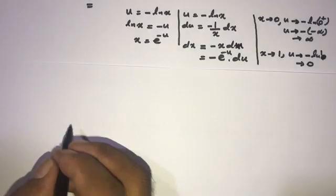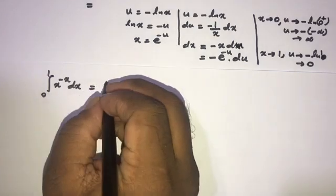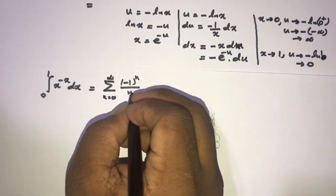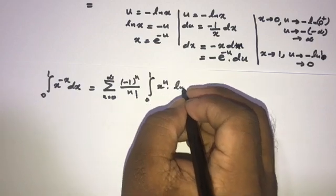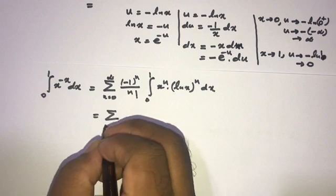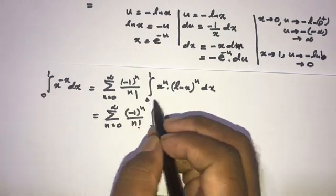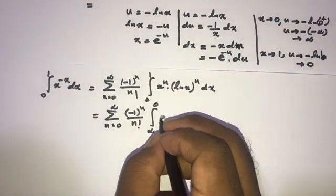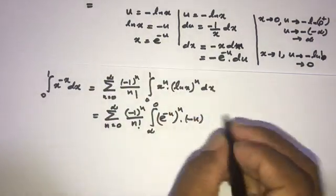Now our full integral from 0 to 1 of x^(-x) dx equals the sum from 0 to infinity of (minus 1)^n over n factorial, times the integral from 0 to 1 of x^n times (ln x)^n dx. Applying the substitution, the lower limit becomes infinity and upper limit 0. With x equals e^(-u), x^n becomes e^(-un), and natural log of x becomes minus u, so (ln x)^n becomes (-u)^n.